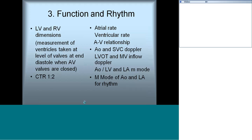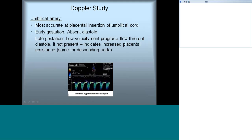For rhythm assessment, measure the atrial rate, the ventricular rate, and check the atrioventricular relationship. This can be done using Doppler or M-mode. Aorta and inferior vena cava Doppler, or left ventricular inflow and outflow Dopplers, can be used. M-mode of the aorta and LV, or LA and LV, can also be used. We will not go into the detail of rhythm disturbances in this session.